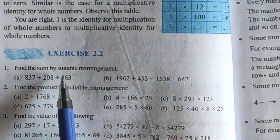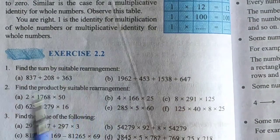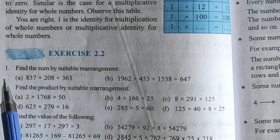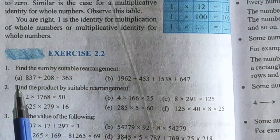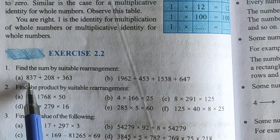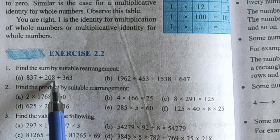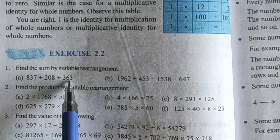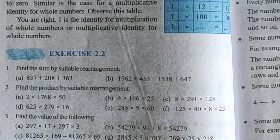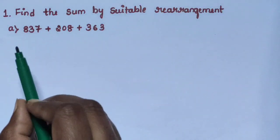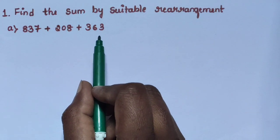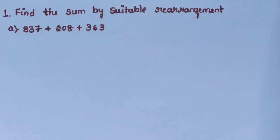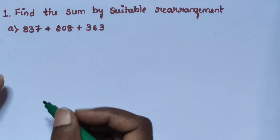Hi children, let us start Exercise 2.2, Chapter 2 - Whole Numbers, Question Number 1: Find the sum by suitable rearrangement. Sub-question A: 837 plus 208 plus 363. Once again, 837 plus 208 plus 363. First, rearrange the numbers and add these 3 numbers.